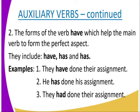The forms of the verb 'have' help the main verb to form the perfect aspect. Forms of 'have' include: have, has, and had. For example: 'They have done their assignment.' 'He has done his assignment.' 'They had done their assignment.' These all form the perfect aspect.